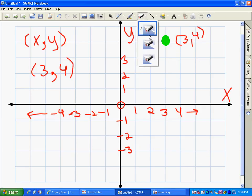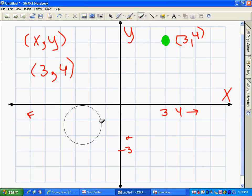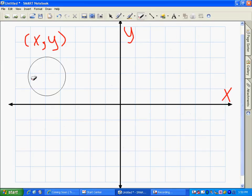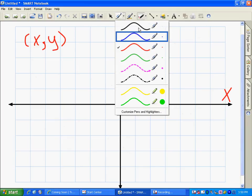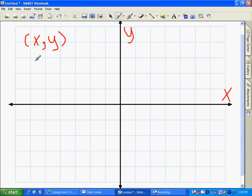All right, let me give you another one. All right, let me give you the point negative 2, comma 1. Okay, again, we always start from the center.